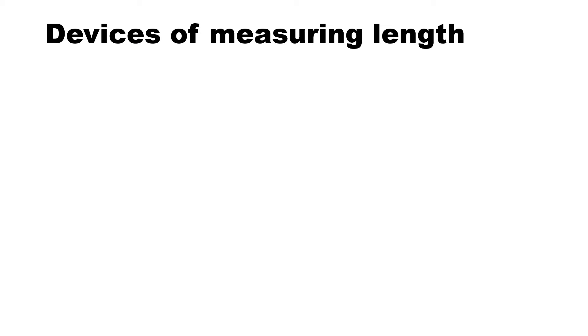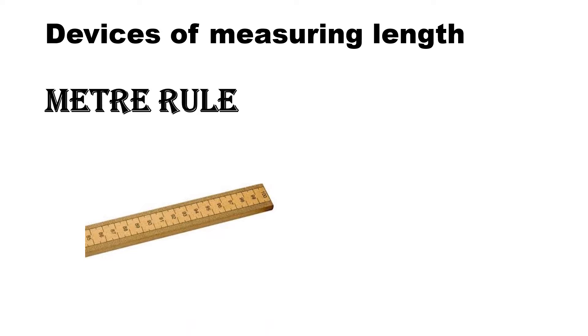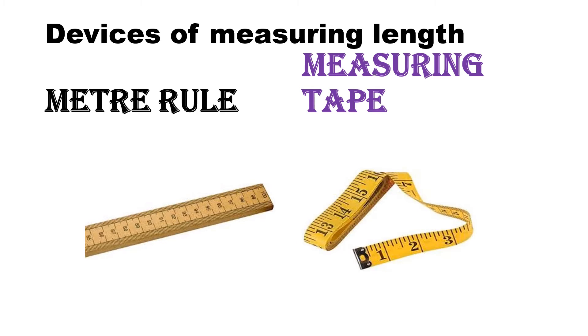Then next devices of measuring length. So what are the devices which we use to measure length? So first is a metre rule. You all know that here you have 100 centimetre long ruler. So this is called a metre rule to measure distances. And here you can also use measuring tape. Like the tailor uses measuring tape to take measurements. So curved surface, when the surface is curved, you can use a measuring tape. You cannot do it with a wooden metre rule.